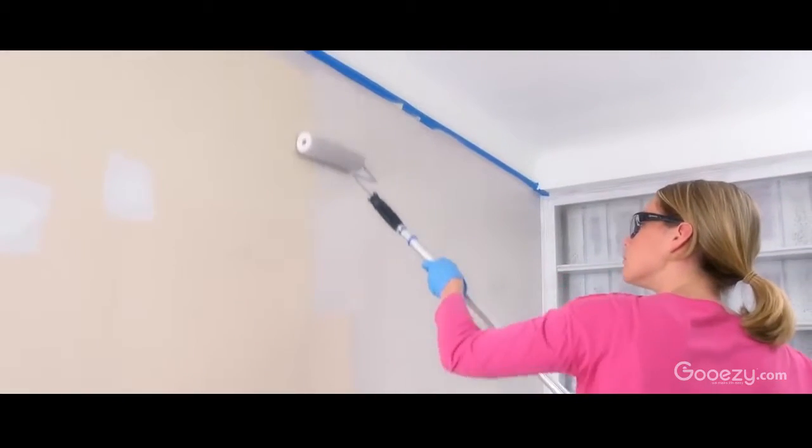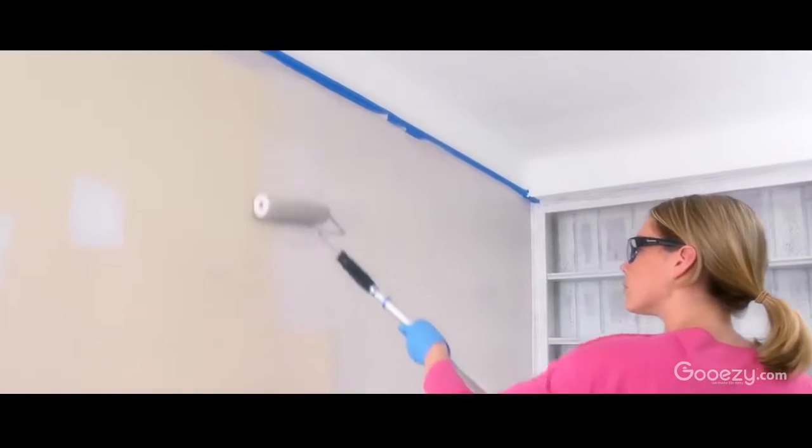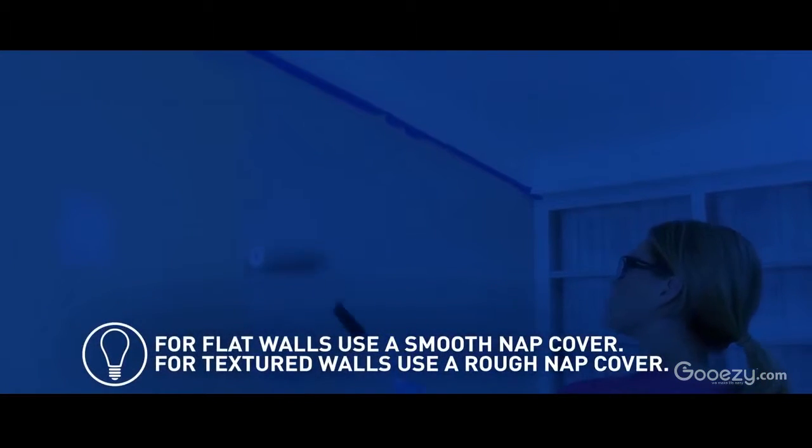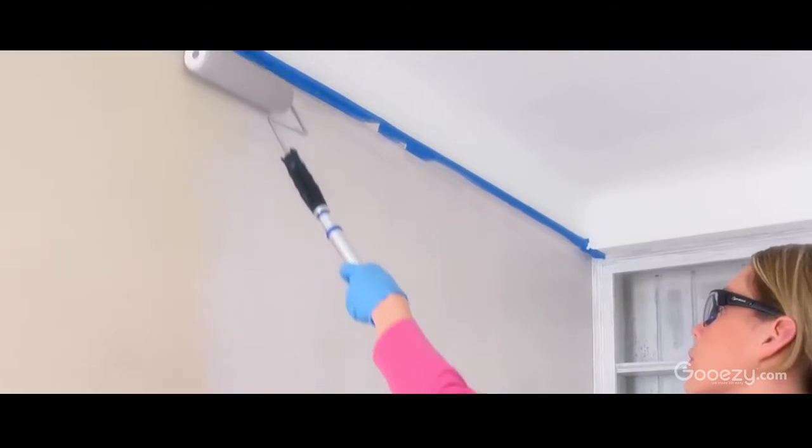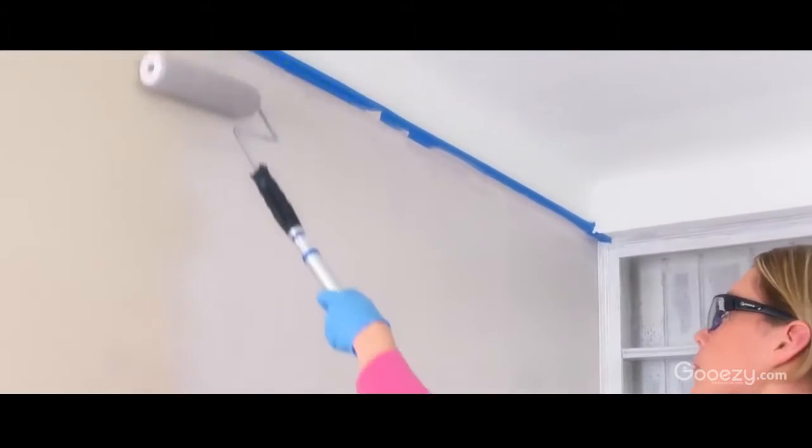Starting near the edge, roll the paint in a zigzag pattern. It helps to roll in several directions to get good coverage, especially on textured walls. Go slow to avoid paint splatter.